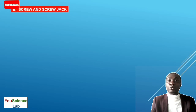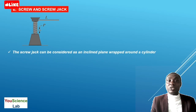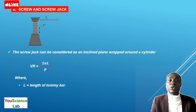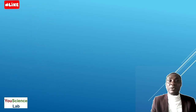Next is the screw and the screw jack. The screw jack can be considered as an inclined plane wrapped around a cylinder. The velocity ratio of the screw jack is equal to 2πL divided by P, where L is the length of the tommy bar and P is the pitch of the screw jack. The pitch is the distance between successive threads of the screw jack.